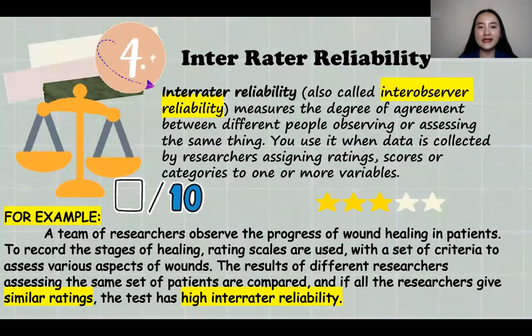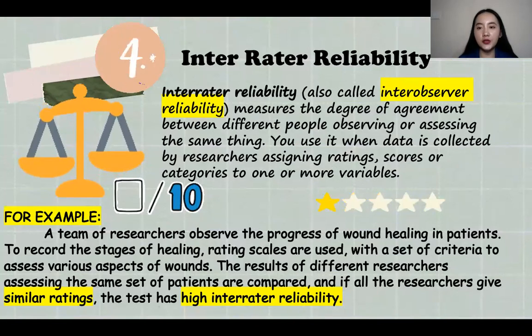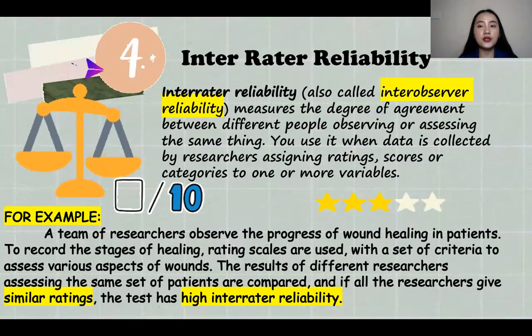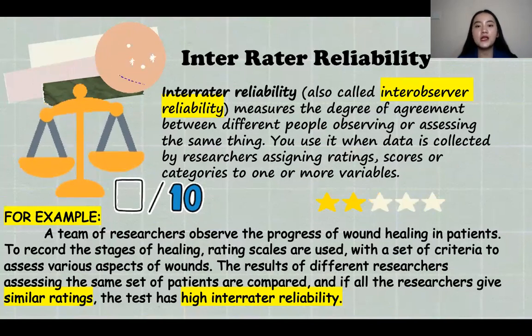And the fourth one is inter-rater reliability. So it is also called inter-observer reliability. It measures the degree of agreement between different people observing or assessing the same thing. So we use it when data is collected by researchers, like assigning ratings, scores, or categories to one or more variables.